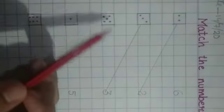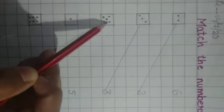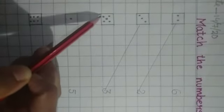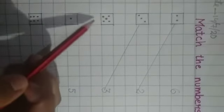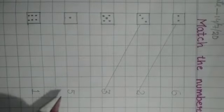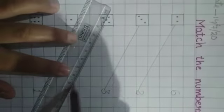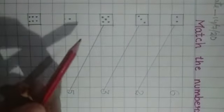Now next one. Let's count it together. 1, 2, 3, 4, 5. How many dots are here? 5 dots. We will find where 5 is written? Here. 5. So we will match this number with that box.